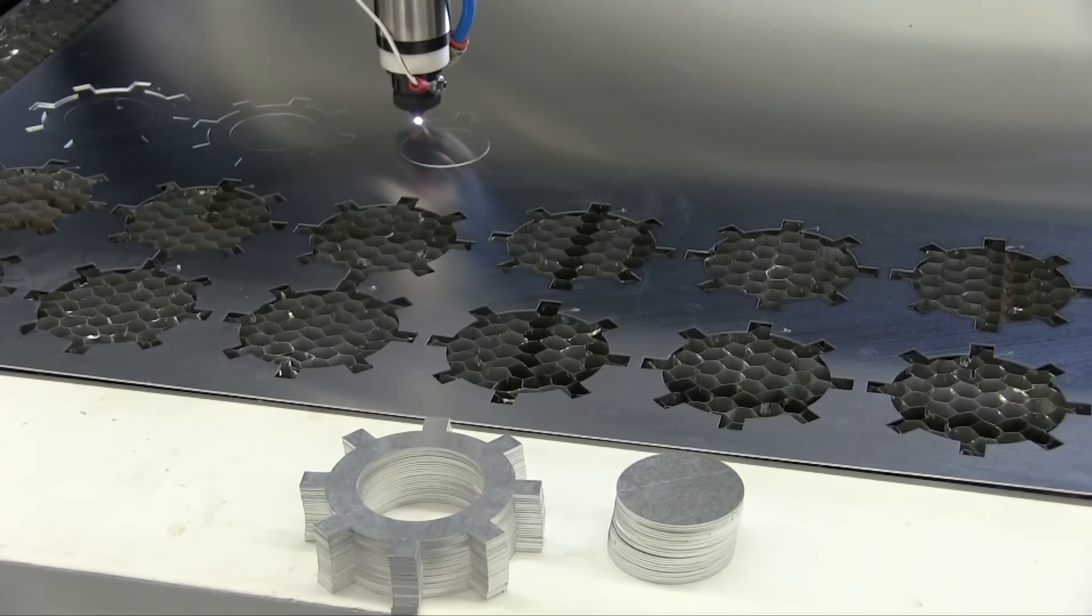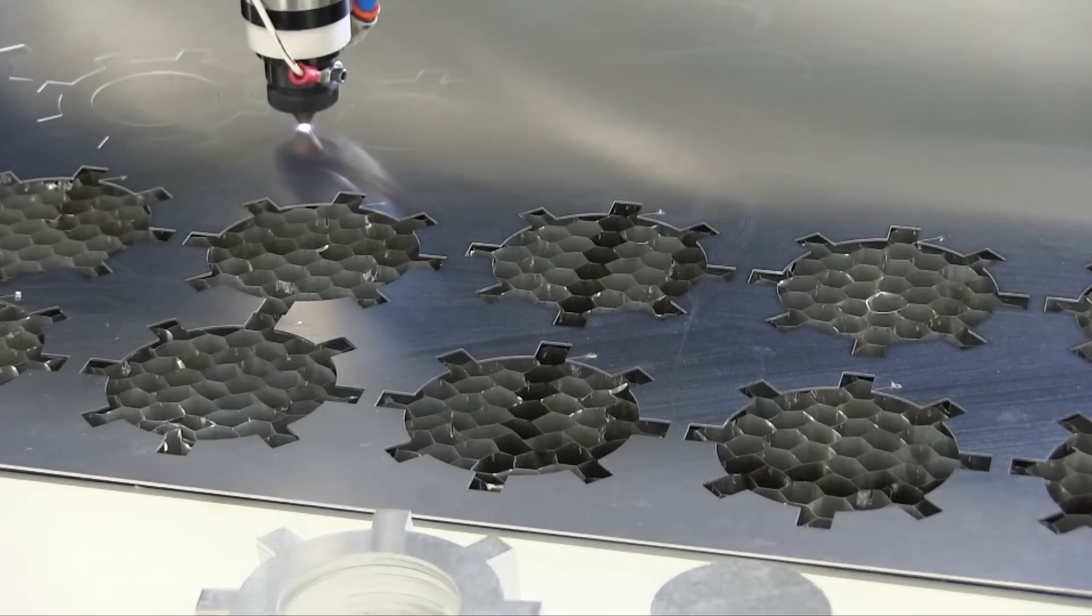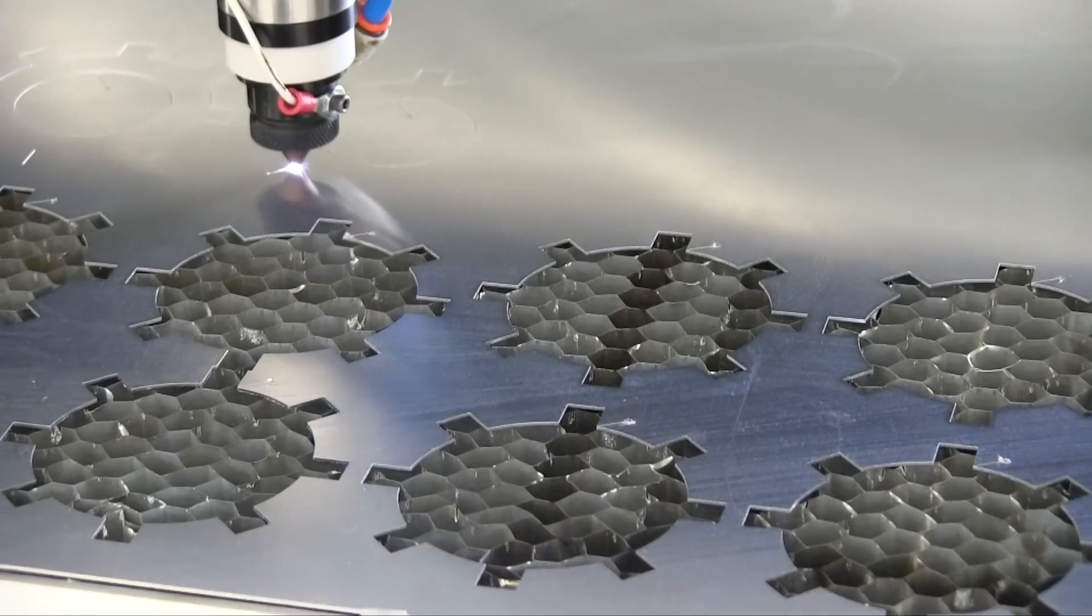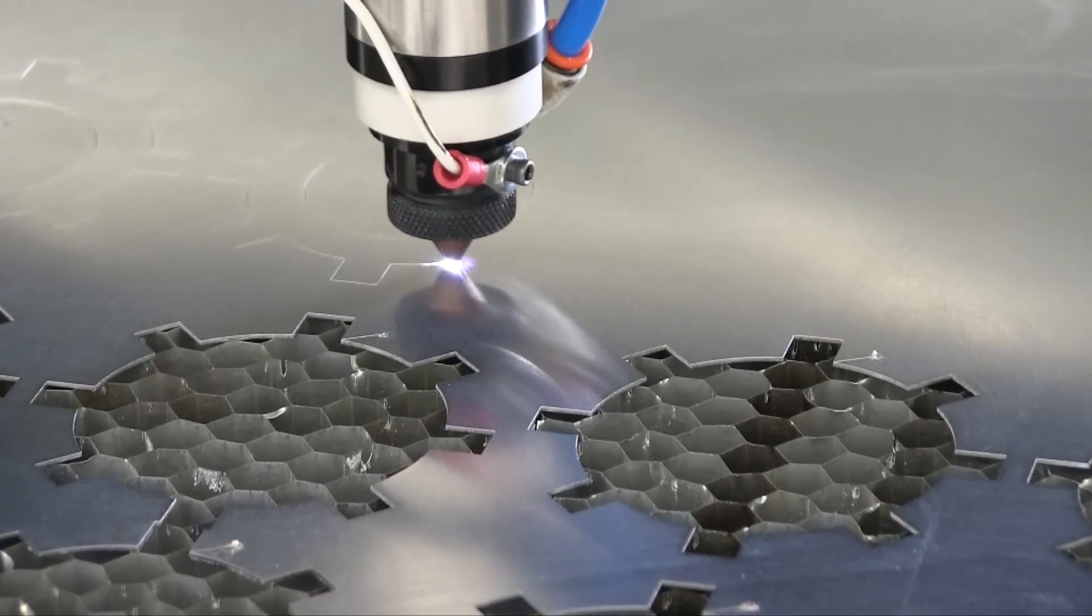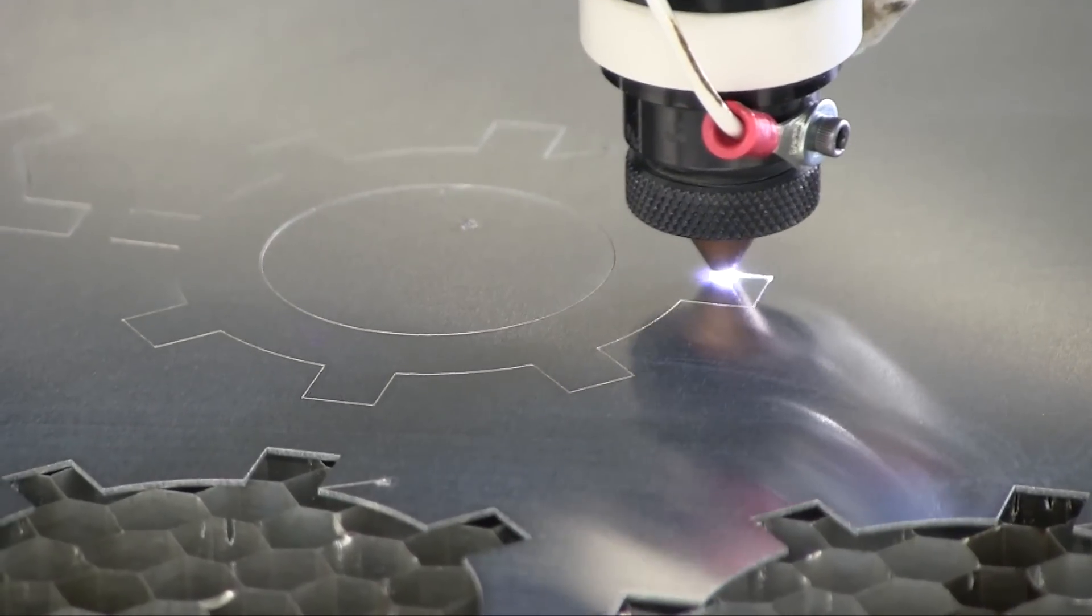As the cutting process begins, the height follower will track the surface of the metal and adjust the nozzle in the z-axis, maintaining a constant focus point while the metal is being cut.